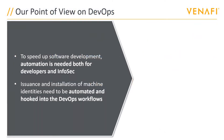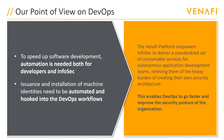Venify's point of view on DevOps is really to help speed up software development. Automation is needed both for developers and InfoSec teams. Issuance and installation of machine identities needs to be automated and hooked into that DevOps workflow. The Venify platform empowers the InfoSec team to deliver a standardized set of consumable services for autonomous application development teams, relieving them of the heavy security burden of creating their own architecture, and enabling DevOps teams to go faster and improve the security posture of the organization as a whole.